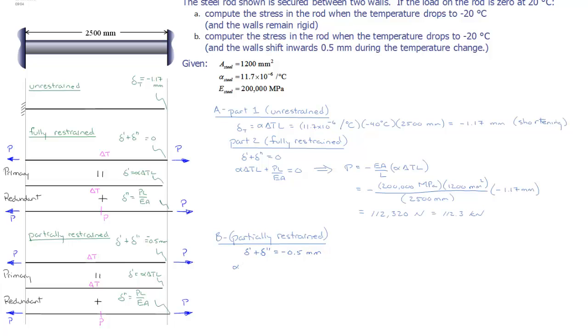Substituting in my two components: alpha delta T L plus PL over EA equals negative 0.5 millimeters. Rearranging this,